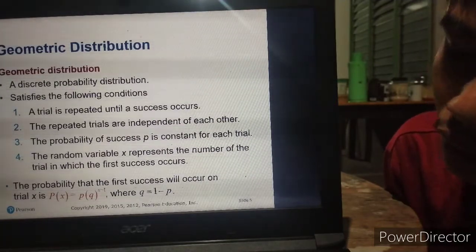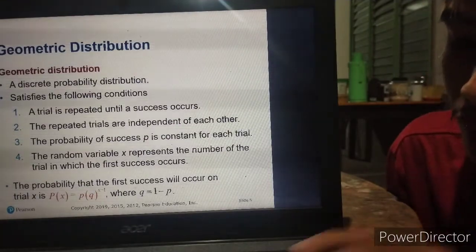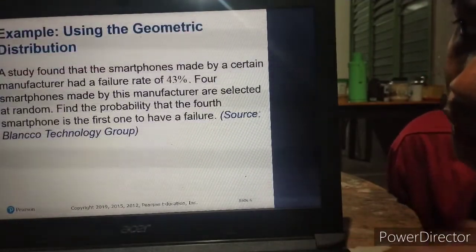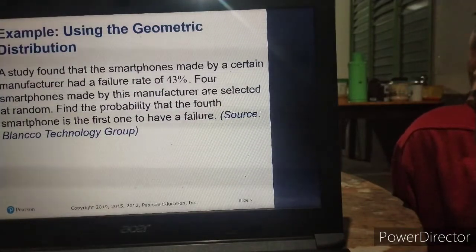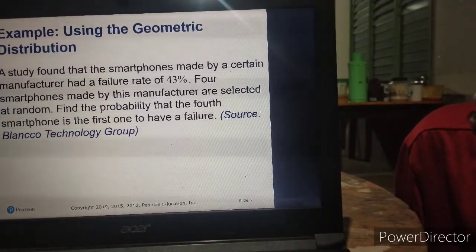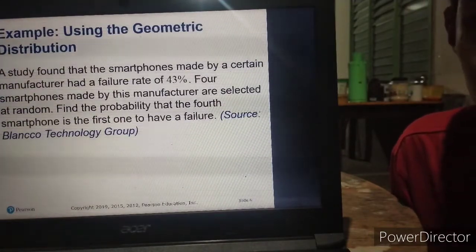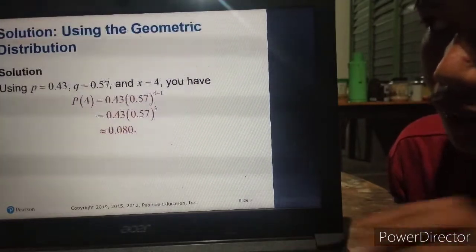Where Q is probability of failure and P is probability of success. So let's have an example. A study found that the smartphones made by a certain manufacturer had a failure rate of 43 percent. If four smartphones made by this manufacturer are selected at random, find the probability that the fourth smartphone is the first one to have a failure.